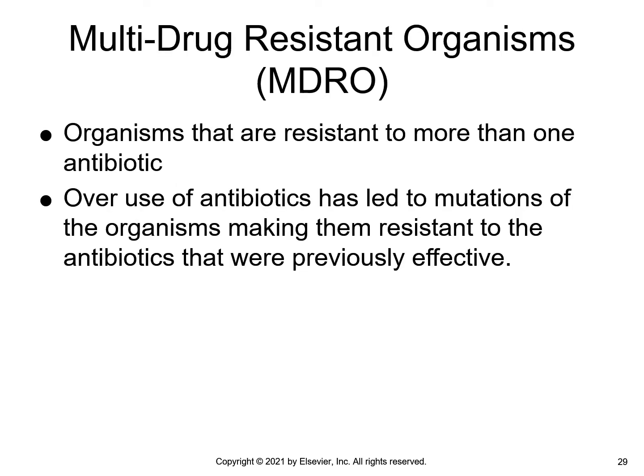Multi-drug resistant organisms arose from the overuse of antibiotics. Antibiotics are for bacteria — viruses are not affected by them. Because antibiotics were overused in the 1970s and 80s, we now have superbugs or multi-drug resistant microorganisms, such as MRSA (methicillin-resistant staph infection) and VRSA (vancomycin-resistant staph). These are two examples of multi-drug resistant organisms.